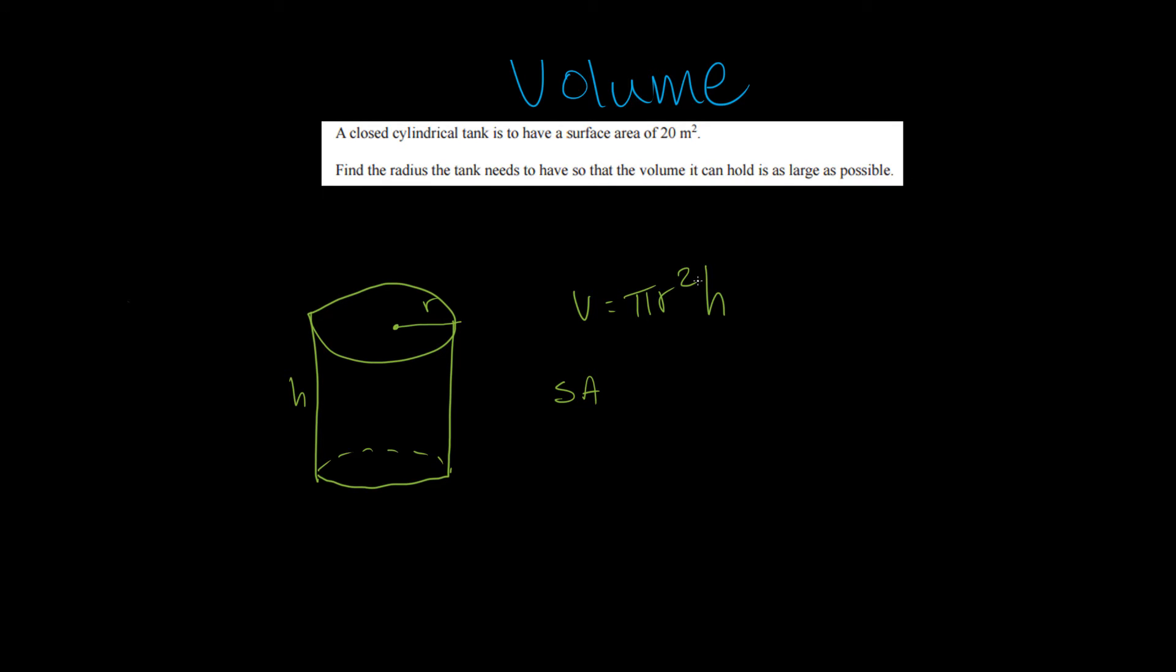Well surface area can be broken down into a few different pieces. So first we have this piece on top and this piece on bottom. And these are both circles. So what's the area of a circle again? That's pi r squared. Since we have two circles, we have 2 pi r squared.